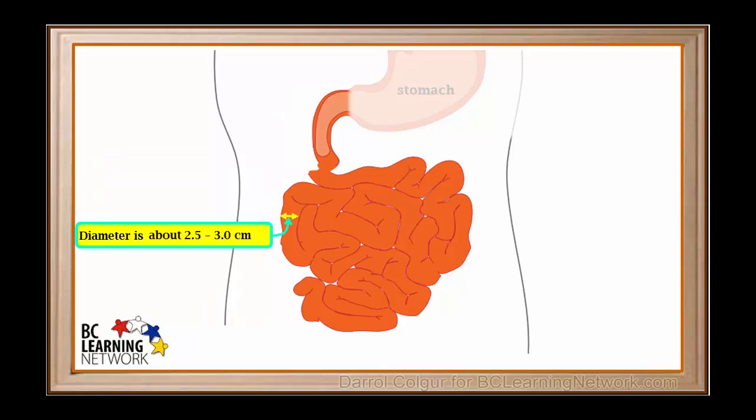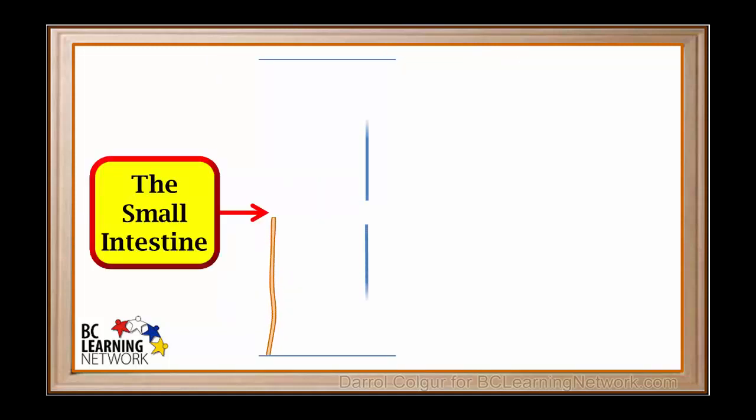The diameter of the small intestine is about 2.5 to 3 centimeters. Its small diameter is the reason it's called the small intestine, but its length certainly isn't small. If we took the average human small intestine and straightened it out, it would reach about 7 meters. Compare this with the height of an average person, which is about 1.8 meters.